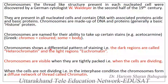Chromosomes show a differential pattern of staining, meaning all chromosomes do not uniformly stain. Certain parts of the chromosome become darkly stained, and these dark regions are called heterochromatin. Whereas the light regions are called euchromatin.